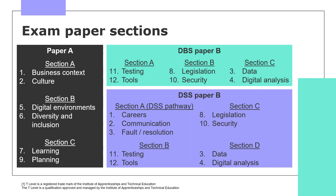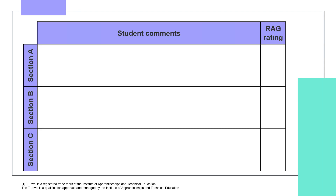Knowing which elements are assessed and where in the paper they are assessed is the first tip for students. Performing a self-evaluation of the content each section will assess can help them identify where it is best to begin. It's often best for students to start on the exam section they are most confident on and the questions they are most likely to answer correctly, as this can have a settling and positive effect on their performance during the exam.